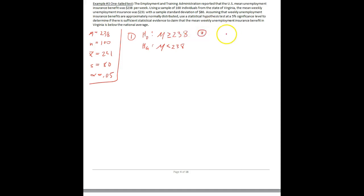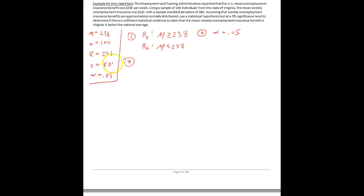Step two: our significance level, our alpha level, is 0.05. Step three: what is our test statistic? This differs from the last section because we have an s here — we don't have a sigma. We're still testing a hypothesis about a mean, but having an s indicates we're going to be using a t-test about a population mean.